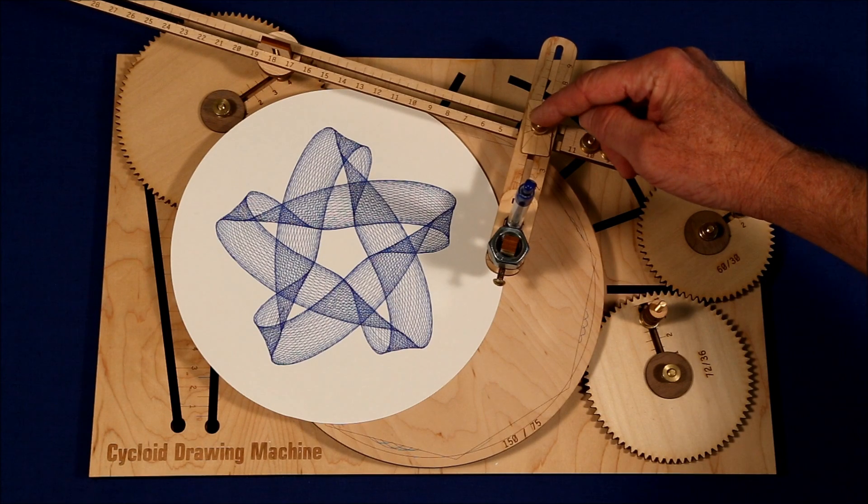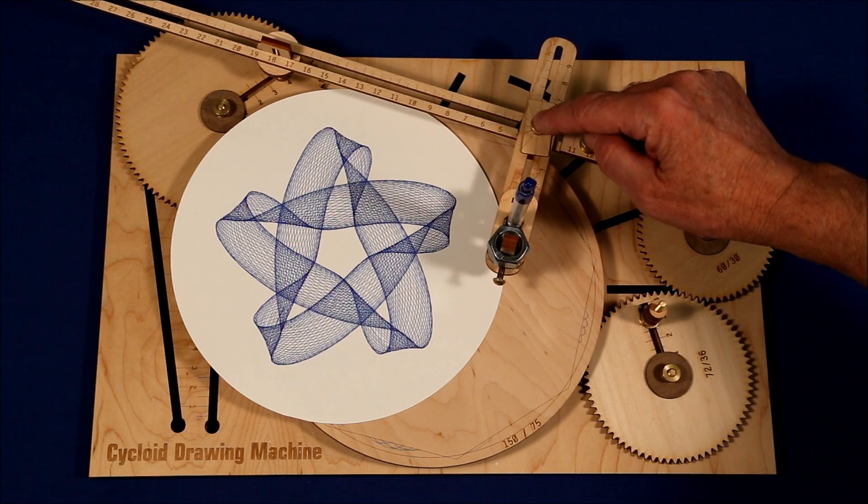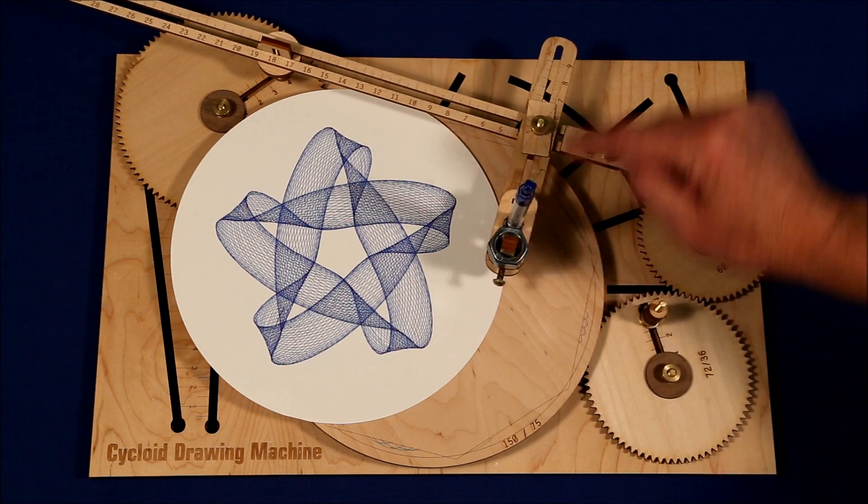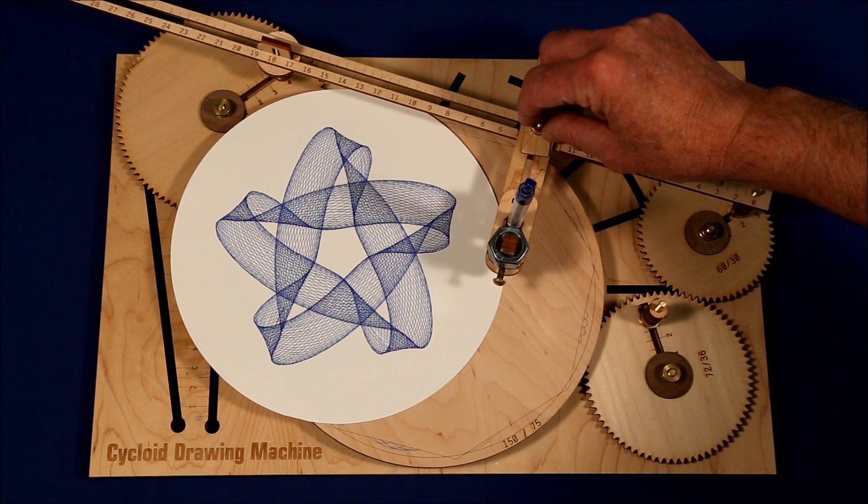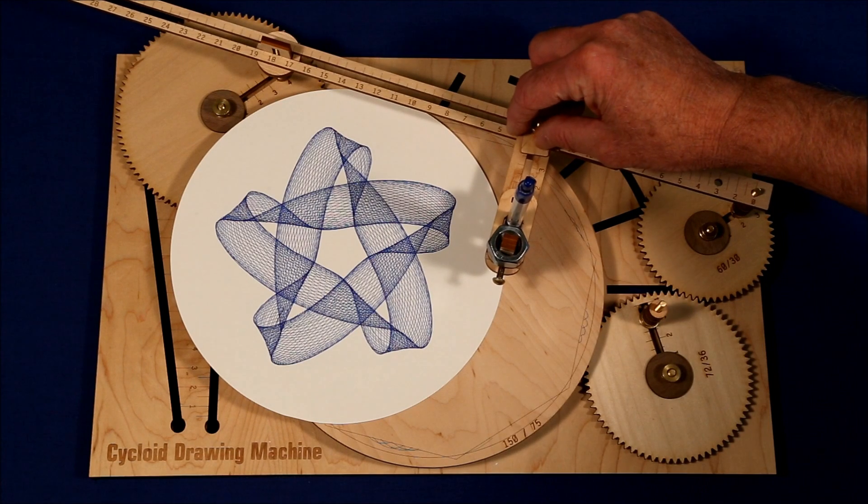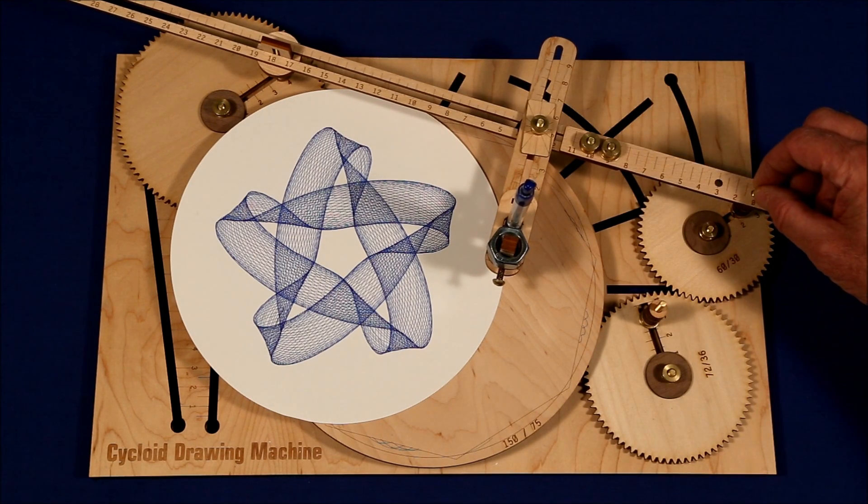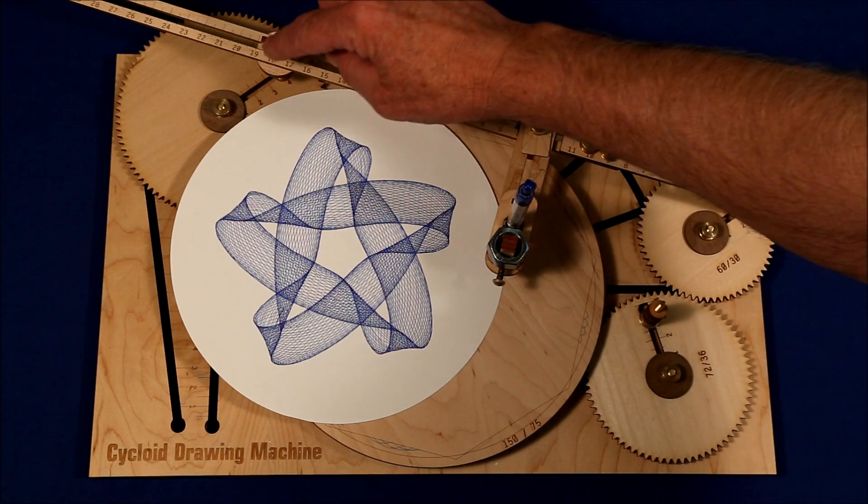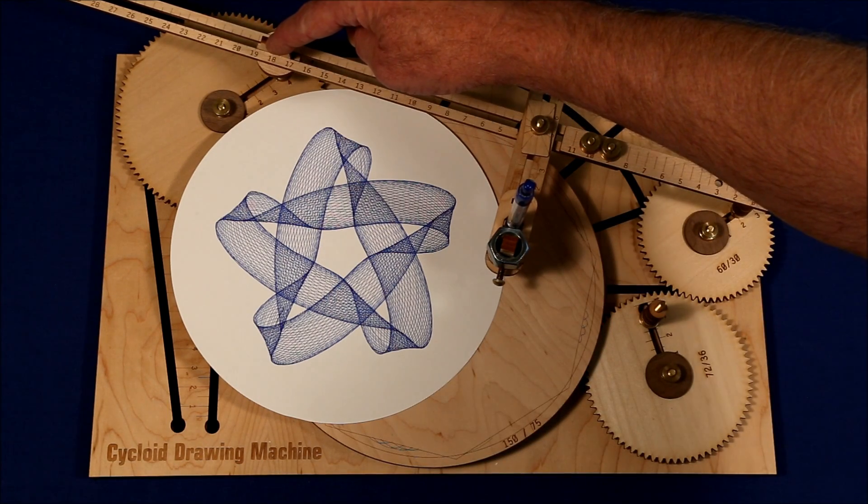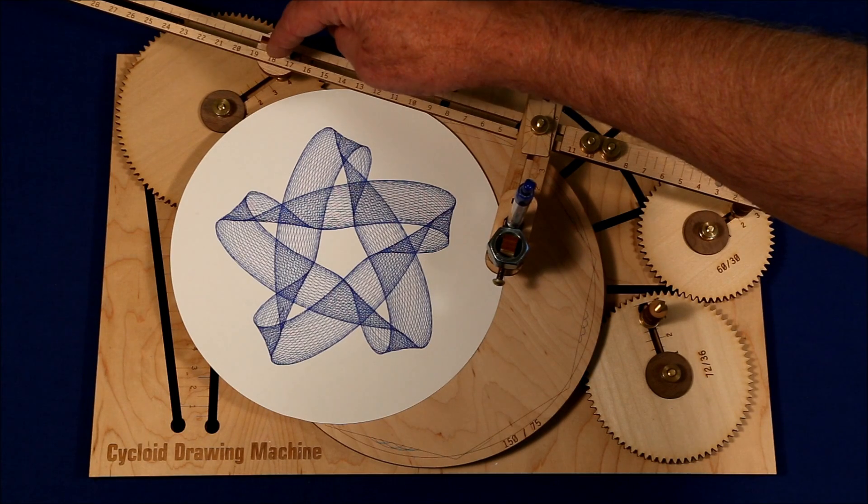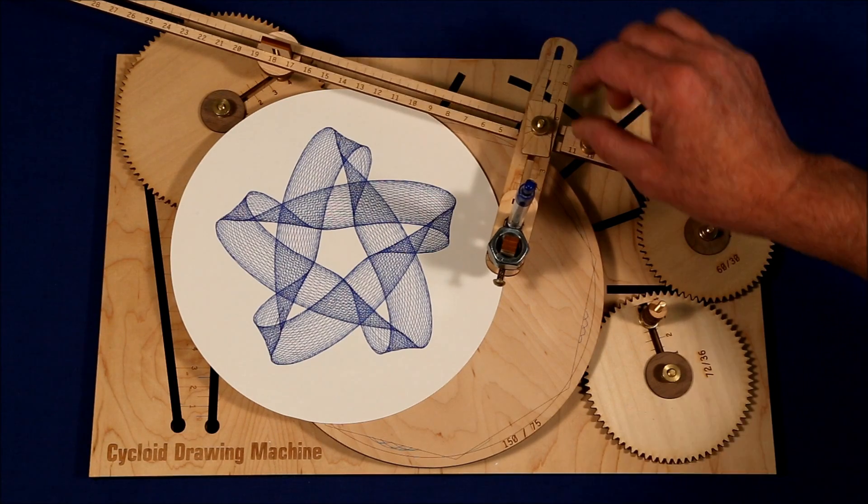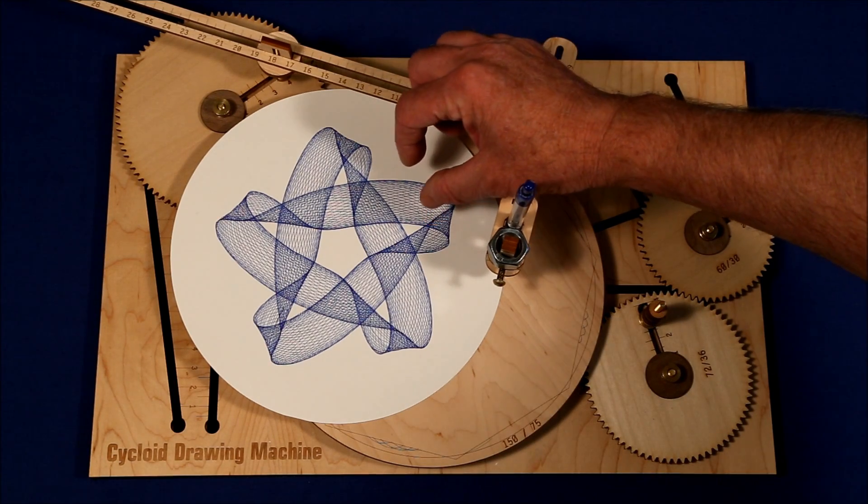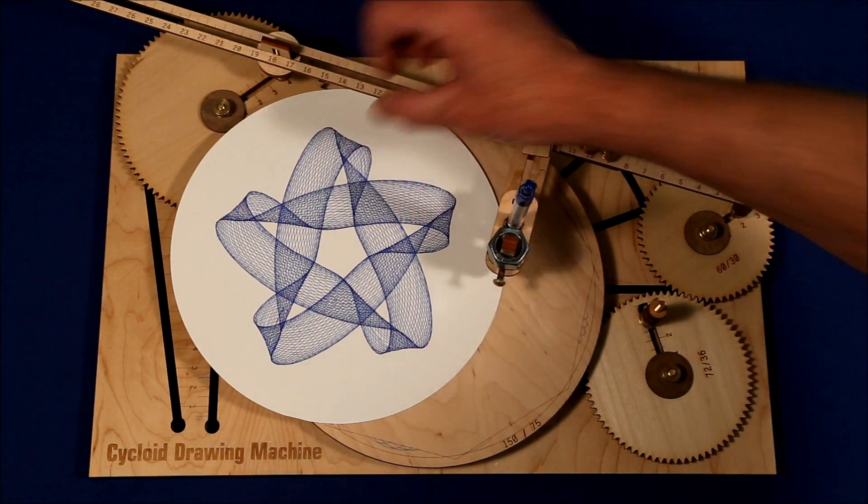You can change the pen position length to be further or closer to the drive arm. You can position its position along the drive arm back and forth. You can reduce or increase the drive radius of the drive pin. You can increase or decrease the radius of the fulcrum position, all of which have profound effect on the shape and thickness of the arms.